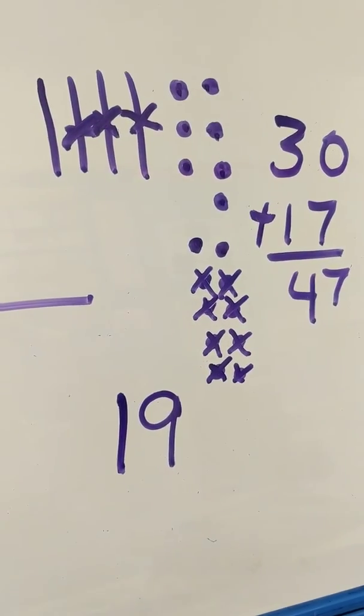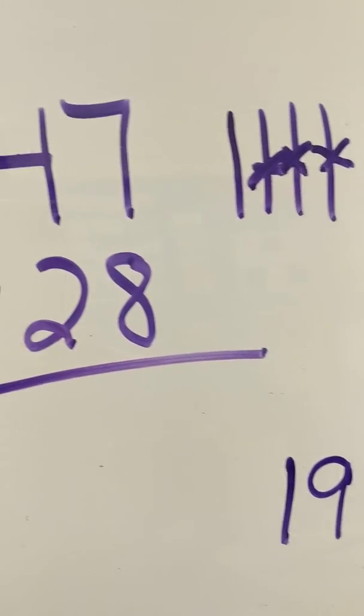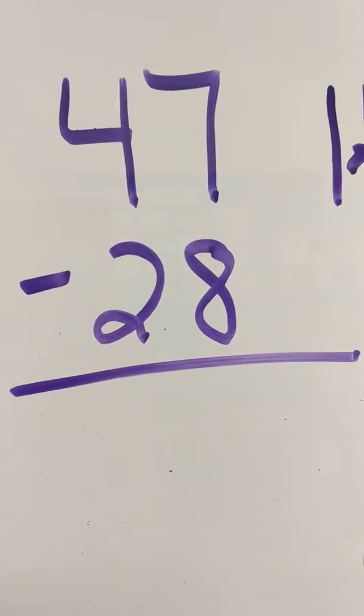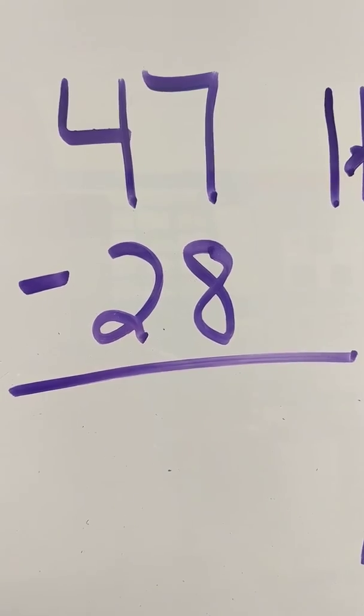Okay, so that's the way we do it with the quick picture. Now if you're doing it the more traditional way, you may just look at it and say, okay, I can't do seven minus eight.